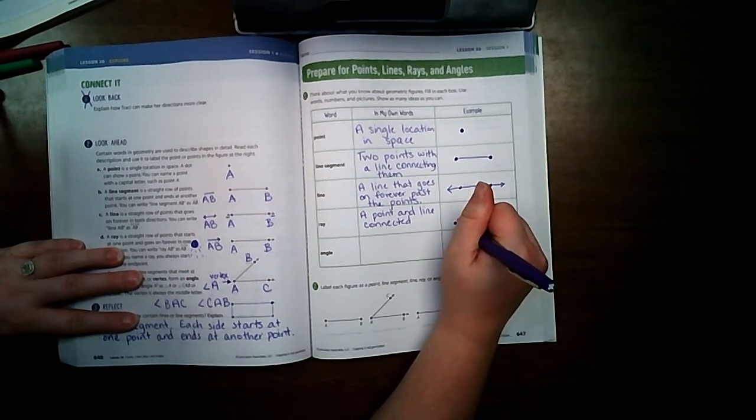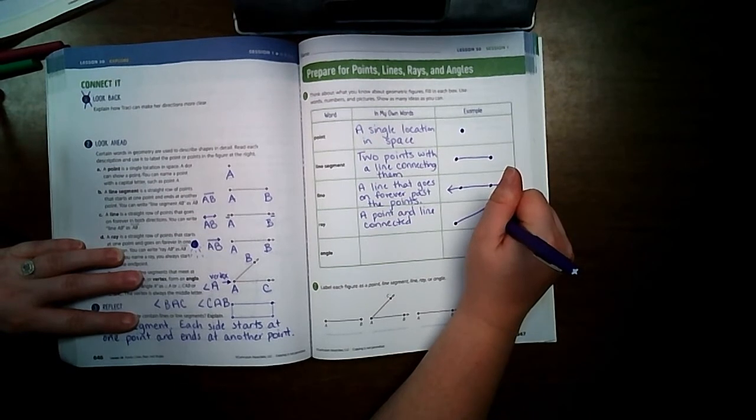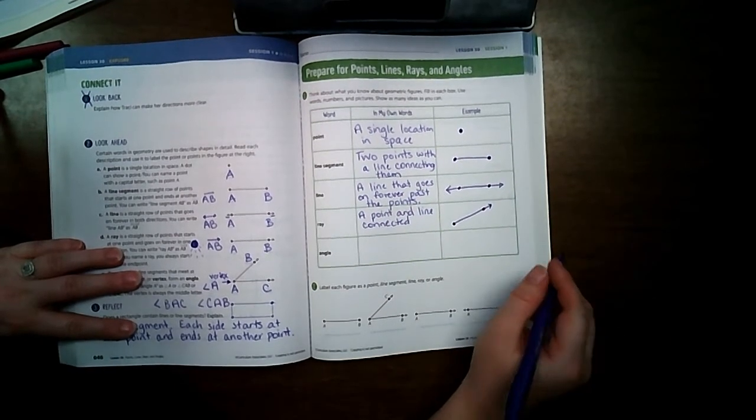We have our arrows, and then I can give it two points because it keeps going. A ray is a point and line connected.